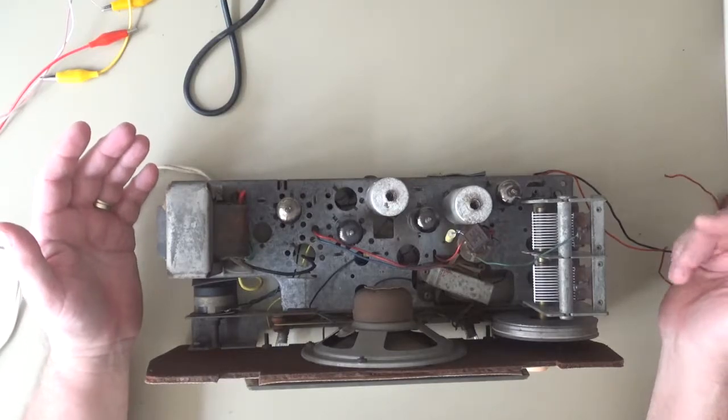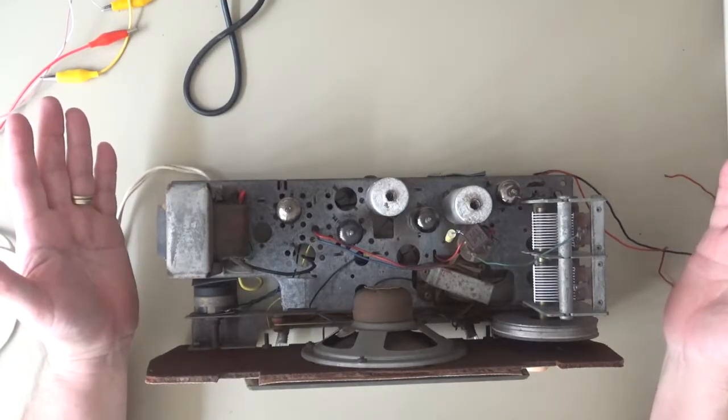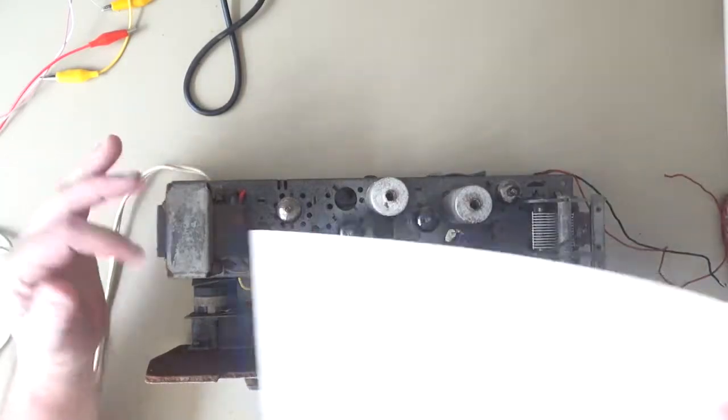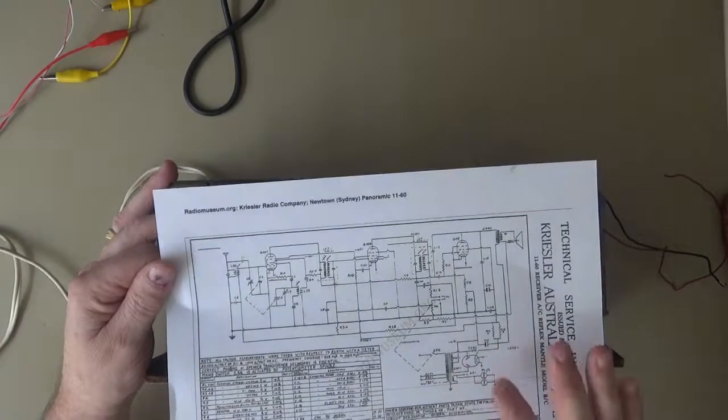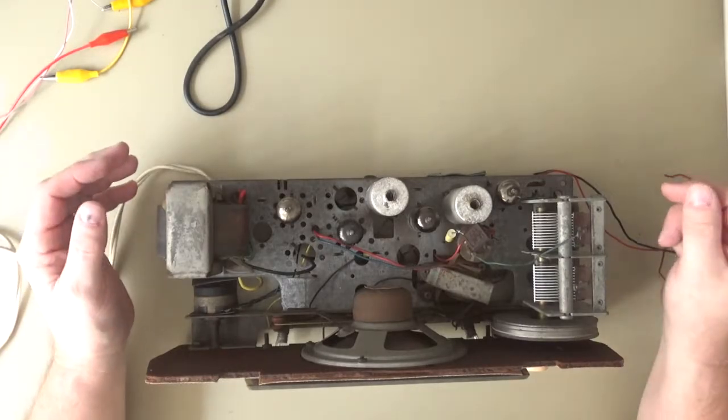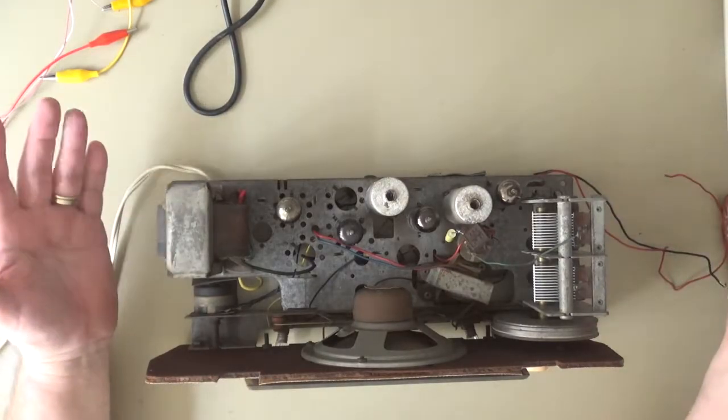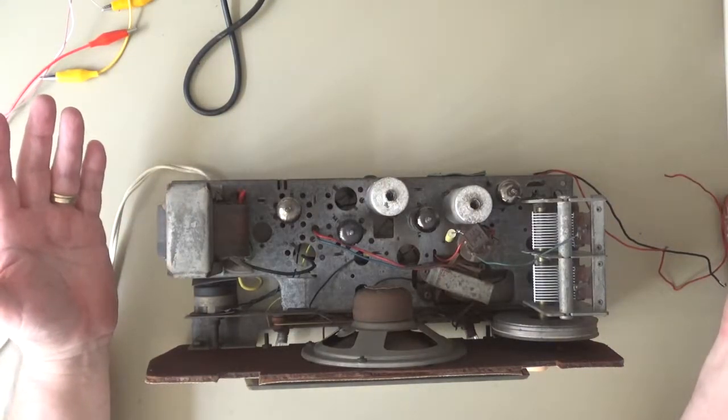So I whacked it on the tube tester and lo and behold, it came up good. It was a 6V4 rectifier tube. I actually had a spare one, so I put it in and still no HT.